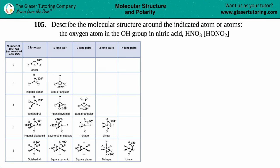Number 105. Describe the molecular structure around the indicated atom or atoms. We want to find the molecular structure for the oxygen atom in the OH group in nitric acid, which is HNO3, or also written as HONO2.